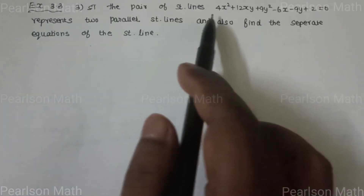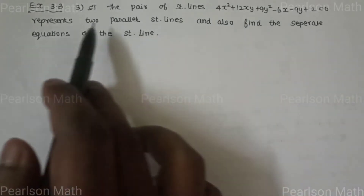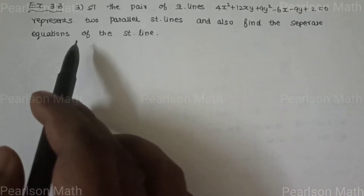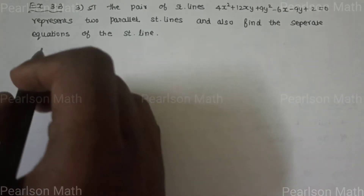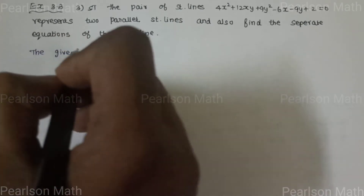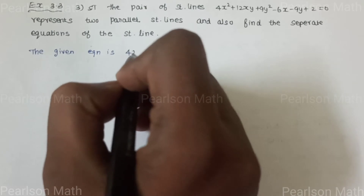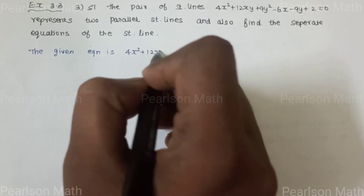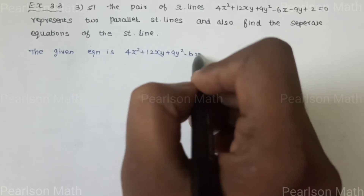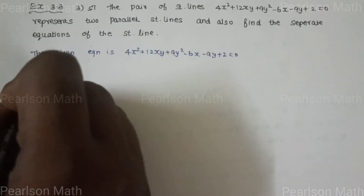Show that the pair of straight lines 4x² + 12xy + 9y² - 6x - 9y + 2 = 0 represent 2 straight lines and also find the separate equations of the straight lines. The given equation is 4x² + 12xy + 9y² - 6x - 9y + 2 = 0.